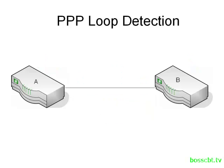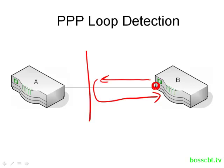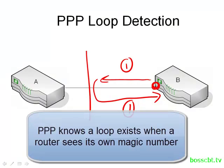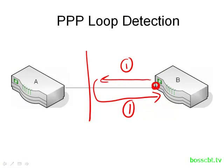However, if a loop happens on the circuit, that's where the magic number is used to detect that loop. Router B sends out an LCP message; it never makes it to router A. In fact, it's looped back towards itself, and so router B receives its own LCP message with its own magic number in it. As soon as that happens, router B says there must be a loop on this circuit — that's a bad thing — and it shuts the interface down. That's how magic numbers are used to detect a loop: if a router sees its own magic number, it knows there's a problem.